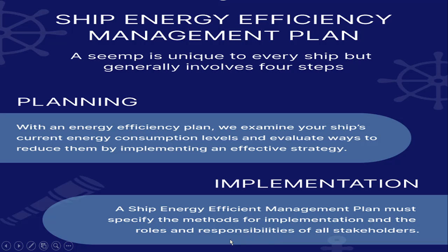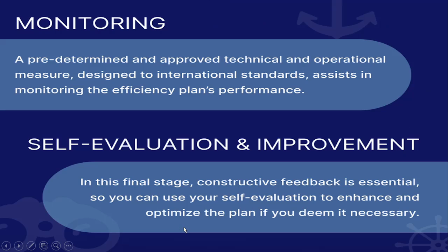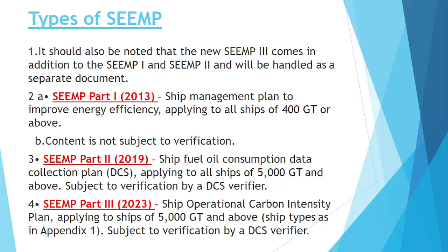The plan is then implemented and responsibilities are assigned to the responsible stakeholders with clear roles. After that, in the monitoring phase, we check whether the plan is working efficiently. Then in the evaluation phase, we check whether we are hitting our target or not and whether improvement is needed. So it is a continuous cycle. SEEMP Part 1 basically says all ships of 400 GT and above need to have a SEEMP on board.